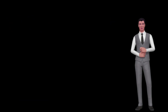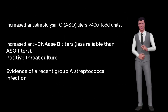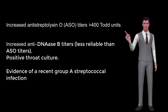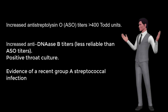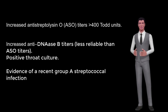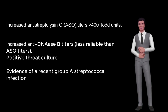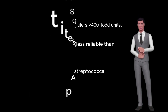Laboratory test findings include increased antistreptolysin O (ASO) titers greater than 400 Todd units. Titers peak at 4 to 5 weeks after streptococcal pharyngitis. High titers are supportive but not diagnostic of acute RF. Increased anti-DNase-B titers are also measured, though less reliable than ASO titers. A positive throat culture provides evidence of a recent group A streptococcal infection, which is particularly significant if there is only one major criterion.